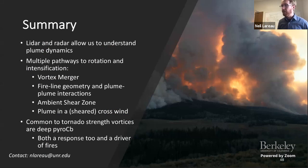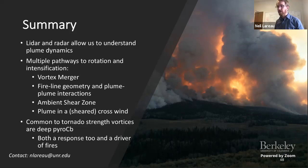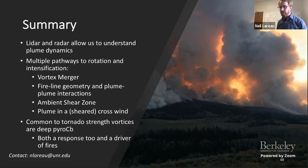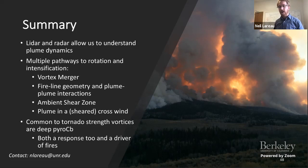To wrap up: LIDAR and radar data allow us to understand plume dynamics in ways we haven't been able to before. There are multiple pathways to rotation and vortex intensification in fire: vortex merger, fireline geometry and plume-plume interactions, an ambient shear zone as the source of tornadic rotation in the Carr Fire case, and plumes in sheared crossflows developing anticyclonic-favored rotation. Common to all cases with tornado-strength rotation — as opposed to weaker rotation — is a link to pyrocumulonimbus. There's still a lot of work to be done understanding the lead-lag relationships between vortices and plume development, and how important latent heat release is in driving these clouds upward.